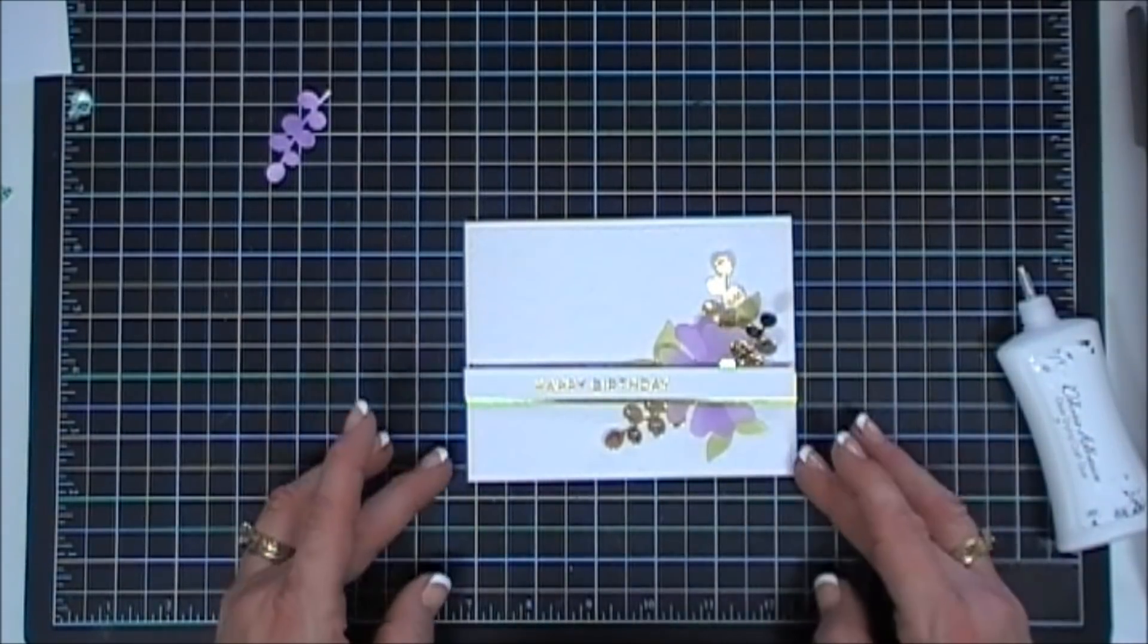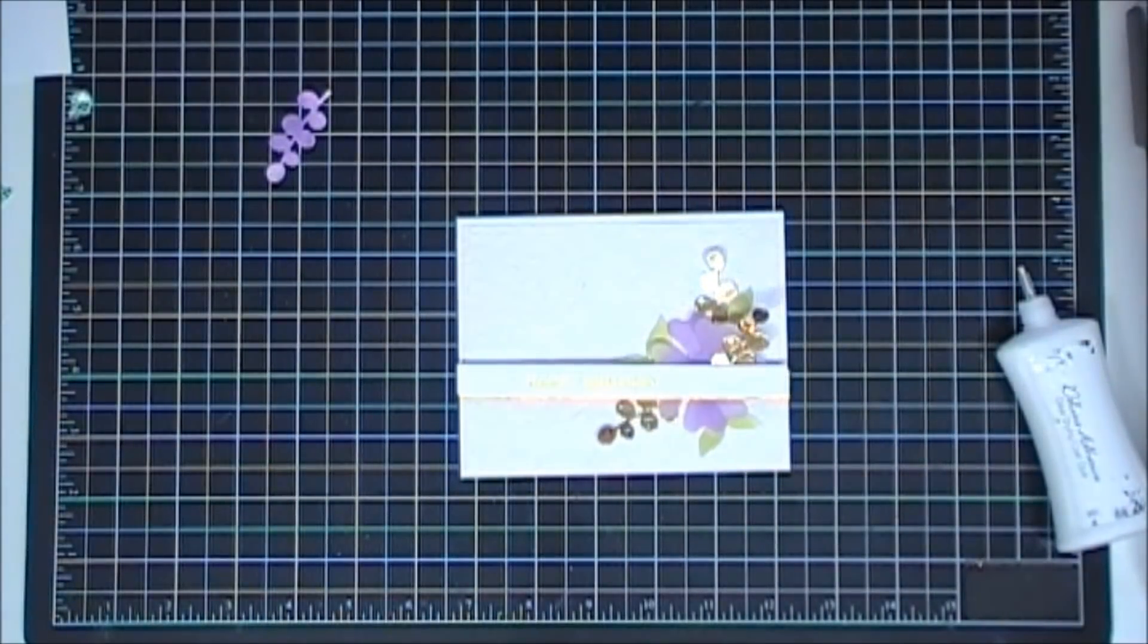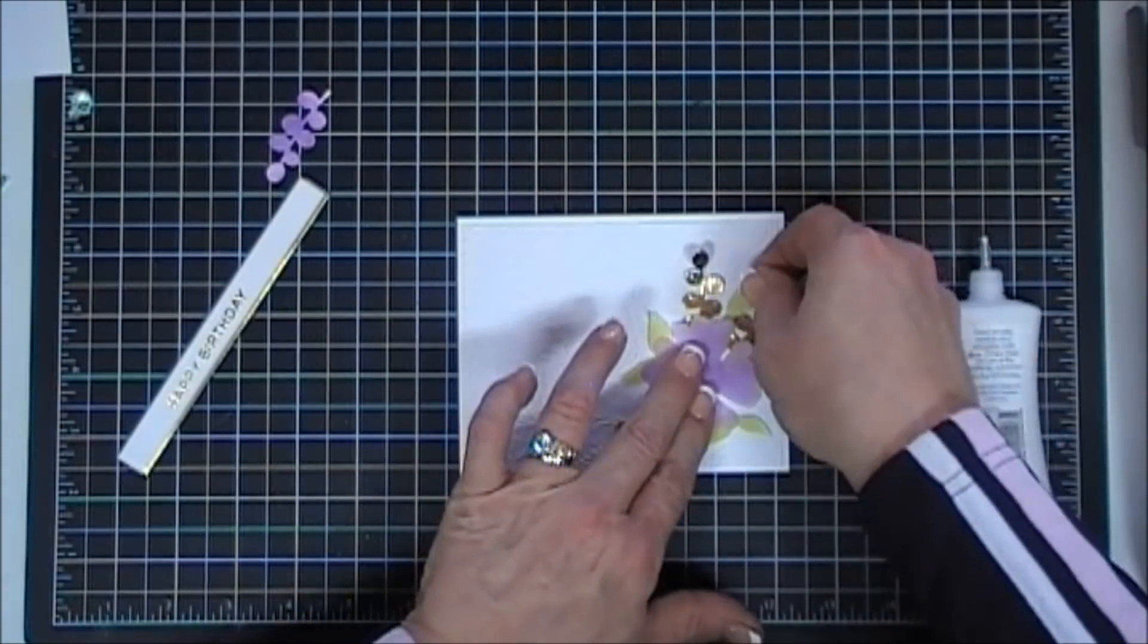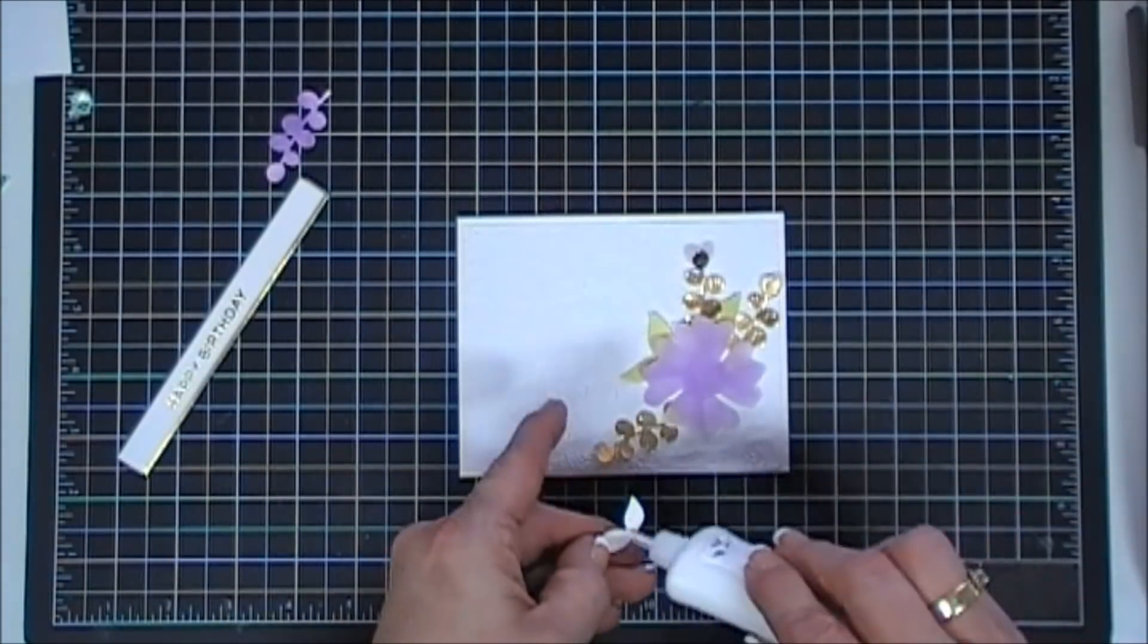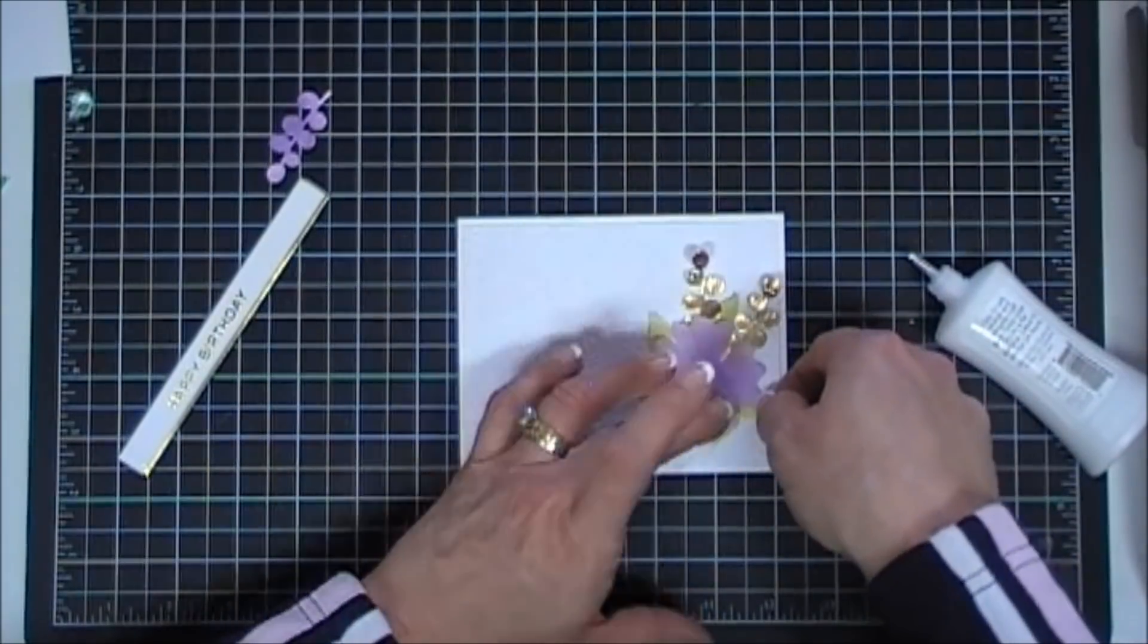And one more. I think that looks great. That's my placement. So I'm going to keep those in place, remove my sentiment, and then just using my glue I'll adhere all my elements down.